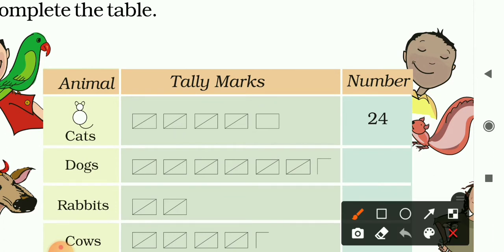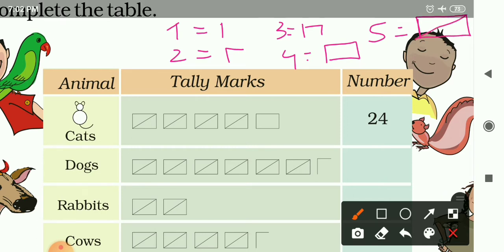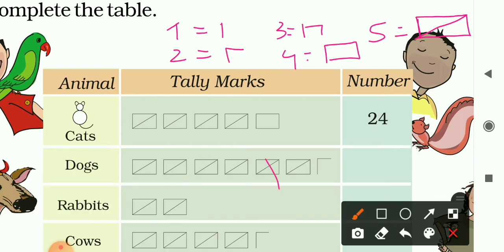A tally mark is used for counting. For one, it is a single mark. For two, it is two marks. For three, it is three marks. For four, it is a complete rectangle shape — four lines. For five, it is one complete rectangle with a diagonal line across it. That is how five is represented.